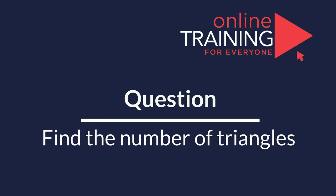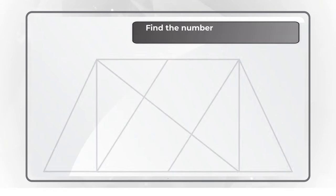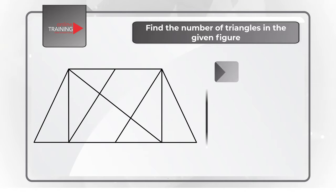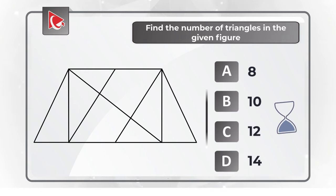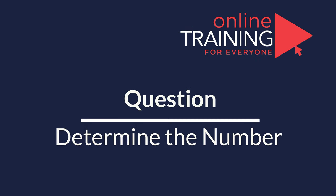Here's a question for you to try your skills. You need to determine how many triangles are shown on the screen. Your choices are: A) 8, B) 10, C) 12, or D) 14. Feel free to pause the video, calculate the right answer, and post your solution in comments.